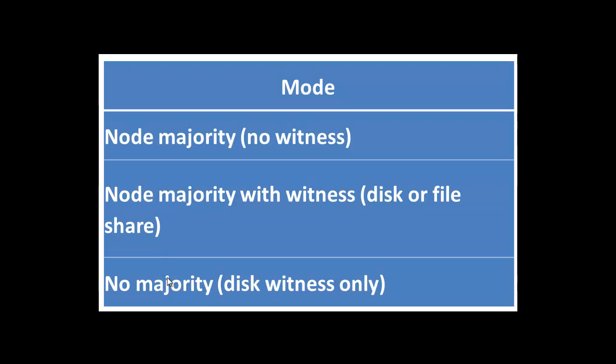Then we have the last option: no majority, disk witness only. For this mode, no nodes have votes — only a disk witness has a vote. The cluster quorum is determined by the state of the disk witness. The cluster has quorum if one node is available and communicating with a specific disk in the cluster storage. Generally, this mode is not recommended for your failover cluster and should not be selected because it creates a single point of failure for the cluster.